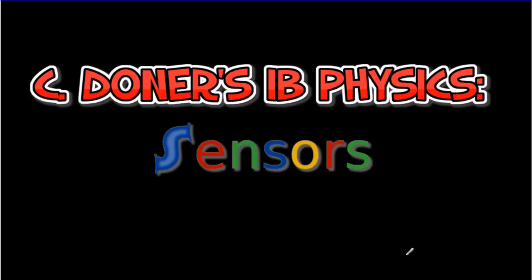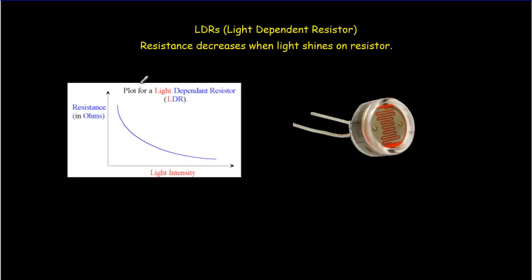Okay, let's have a look at sensors. So a very common application for these potential divider circuits or potentiometer circuits is sensors. And there's three that we're going to look at.